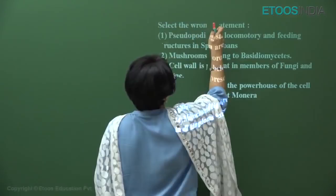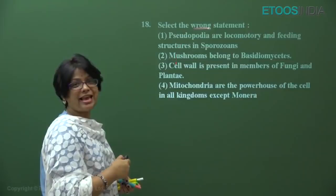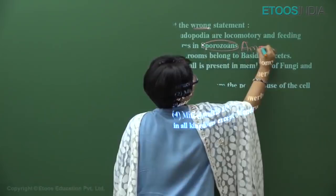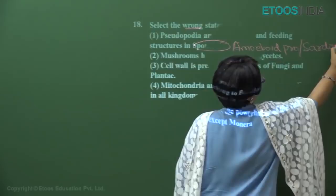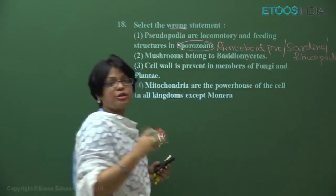As I always tell you, mark whether it is asked 'right' or 'wrong.' Now, pseudopodia are locomotory and feeding structures — yes, but in sporozoa? No. They are present in amoeboid protozoa, which is called Sarcodina or Rhizopoda class. They are not found in Sporozoa. Sporozoa are protozoa which do not have any locomotory organ.